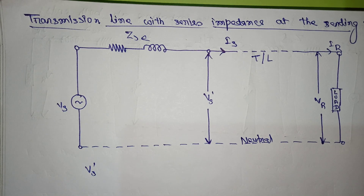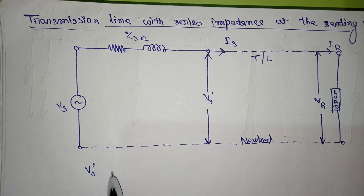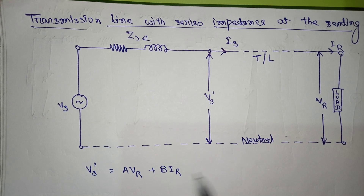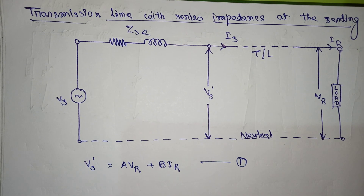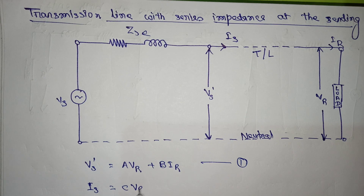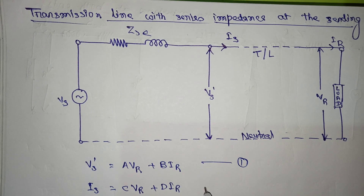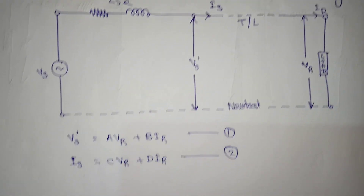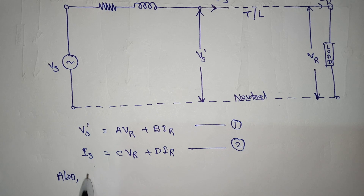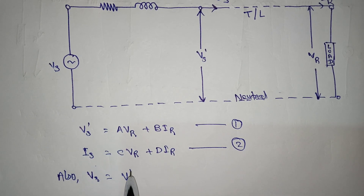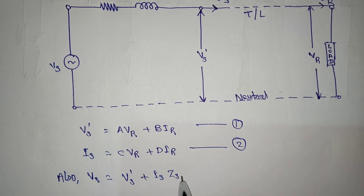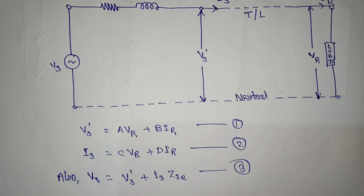Let's start the derivation. First, Vs test is equal to A·VR plus B·IR — this is equation number one. The sending end current Is is equal to C·VR plus D·IR — this is equation number two. Also, the sending end voltage Vs is equal to Vs test plus Is·Zse — this is equation number three.